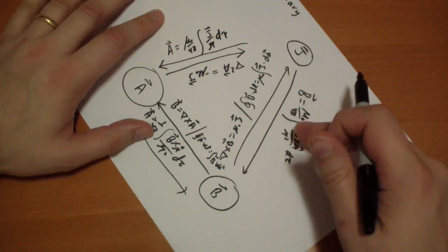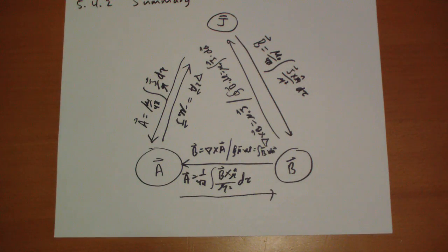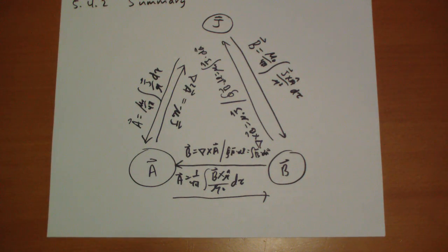Okay? So, slightly easier to solve than this one. And that is the triangle of fun that will help you translate between J's, A's, and B's.